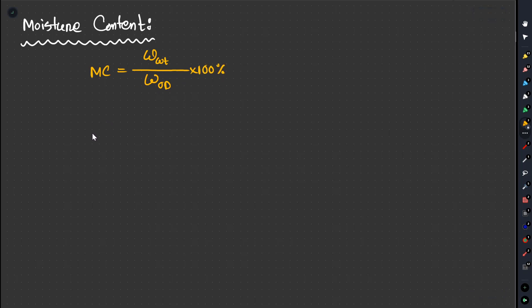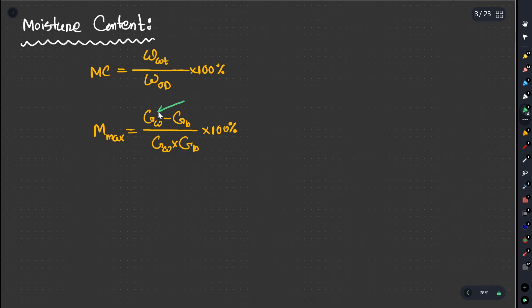We have to calculate maximum moisture content. Maximum moisture content is (Gw minus Gb) divided by (Gw into Gb) into 100%. We use Gw to represent the wood cell wall specific density. This specific density is 1.54. By default, we have to use 1.54.